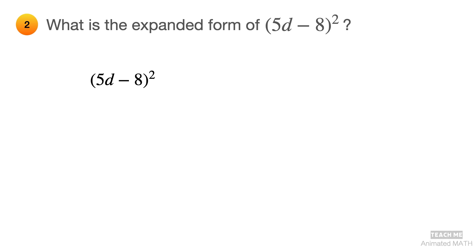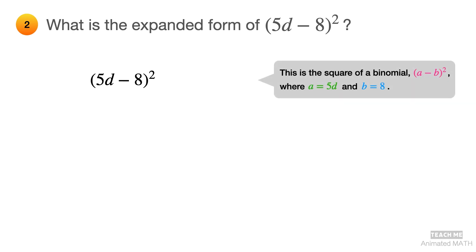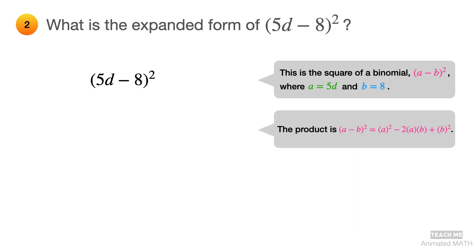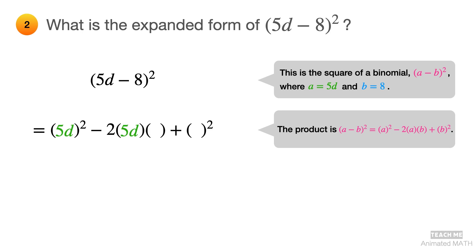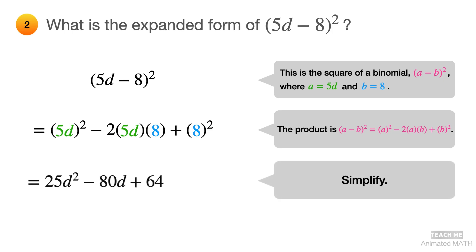This binomial follows the perfect square subtract times subtract pattern, which is a minus b squared. The only difference is that a is equal to 5d and b is equal to 8. Its product is a squared minus 2ab plus b squared. So substitute 5d for all a's and substitute 8 for all b's. Simplify the expression, and the final answer is 25d squared minus 80d plus 64.